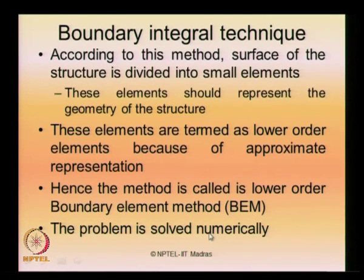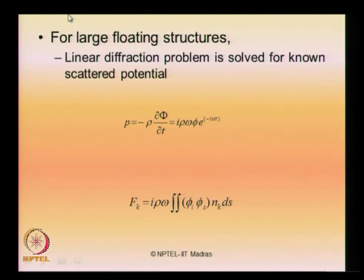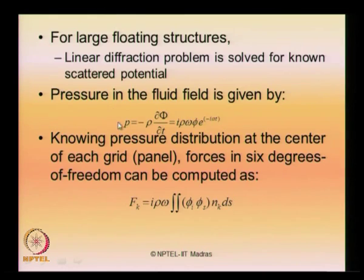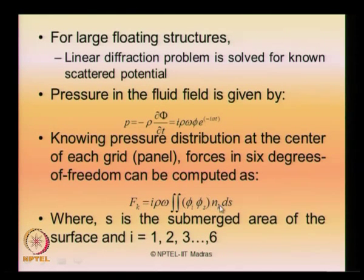Once the problem is formulated, it is solved numerically. When applying this for very large floating structures, we recommend using the linear diffraction problem, which is solved for the known scattered potential. The pressure in the fluid flow is given by the equation shown in the slide. Knowing the pressure distribution at the center of each grid — since the structure or members are divided into different meshes or panels — forces in six degrees of freedom can be computed using this equation, where you know the velocity potential phi_e and phi_s for every n_k, where k is the degree of freedom summation 1 to 6, and S is the submerged area.